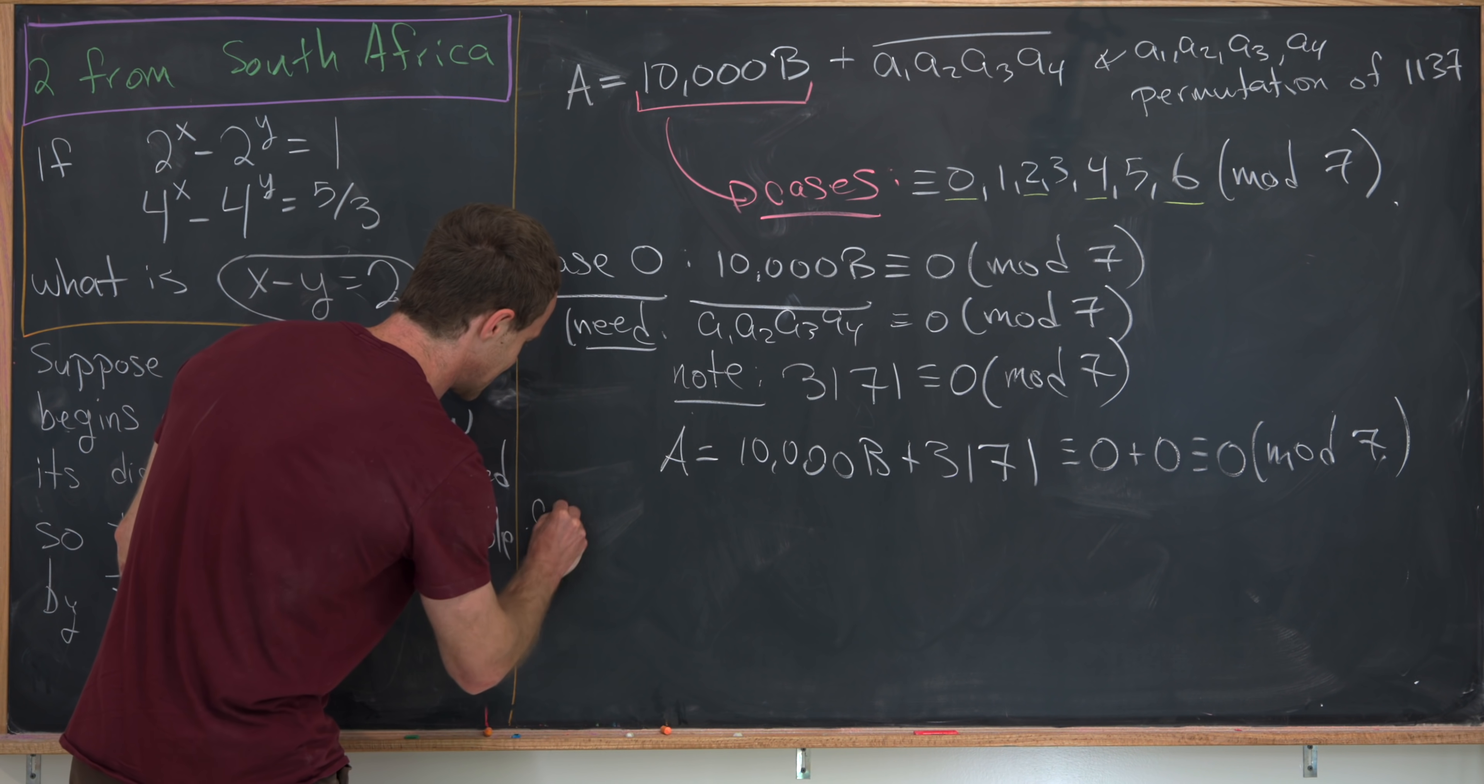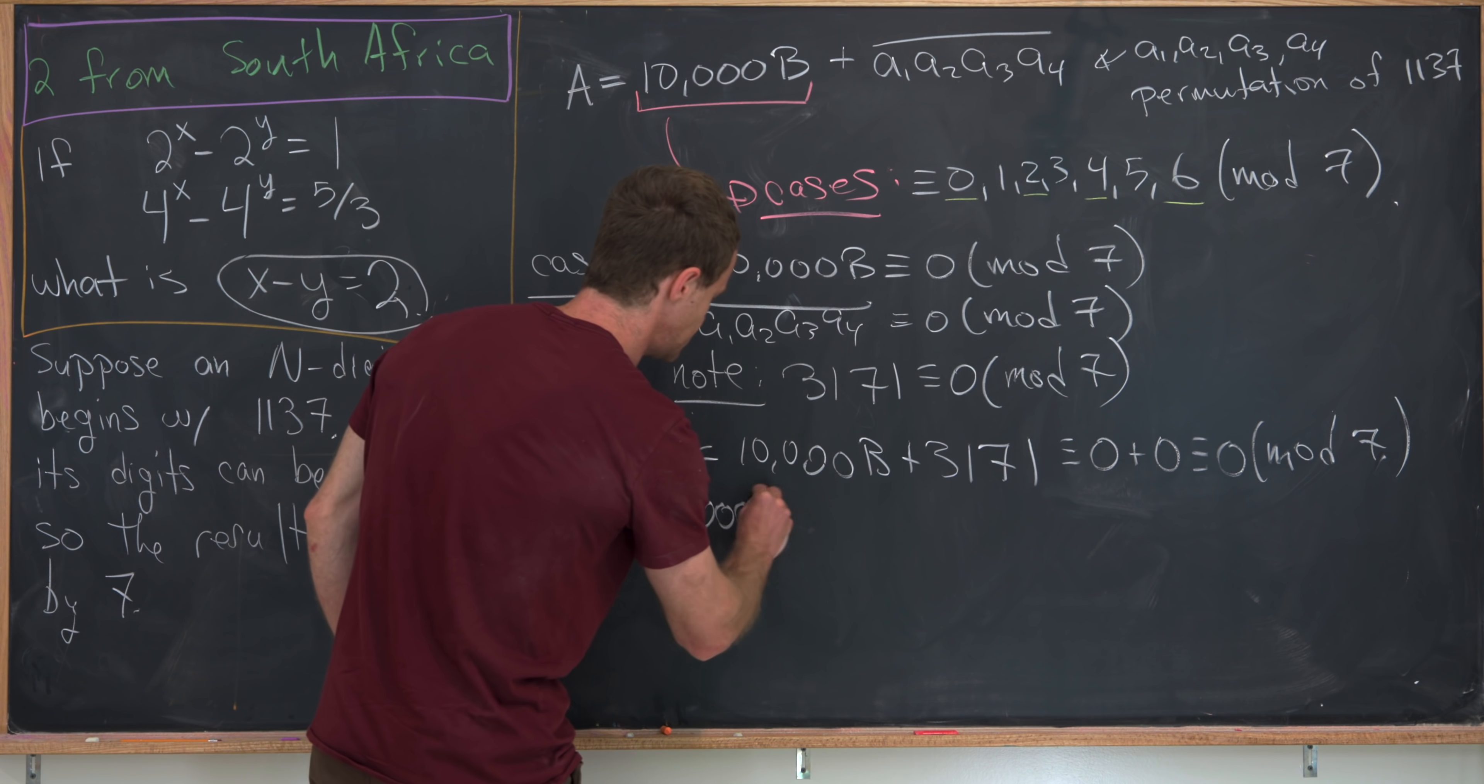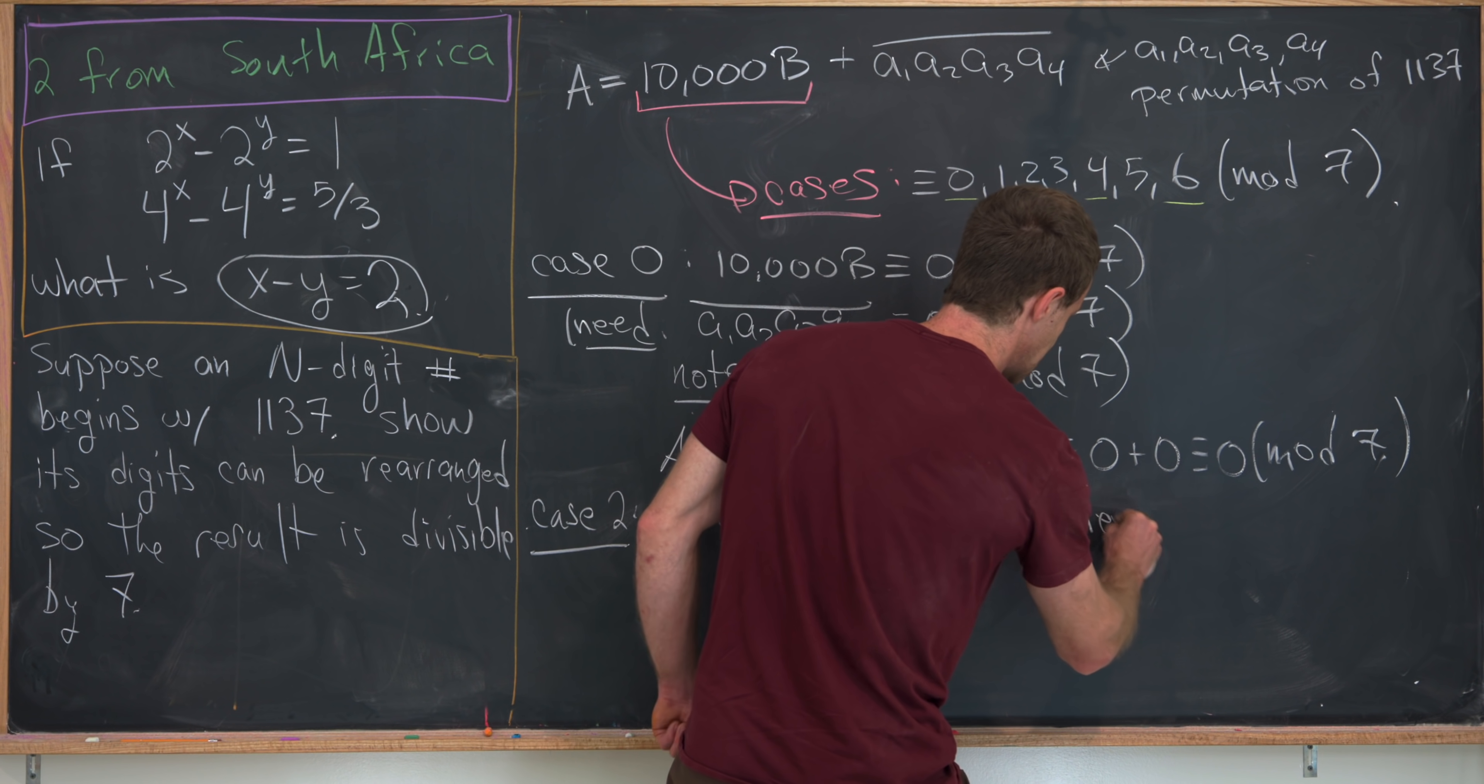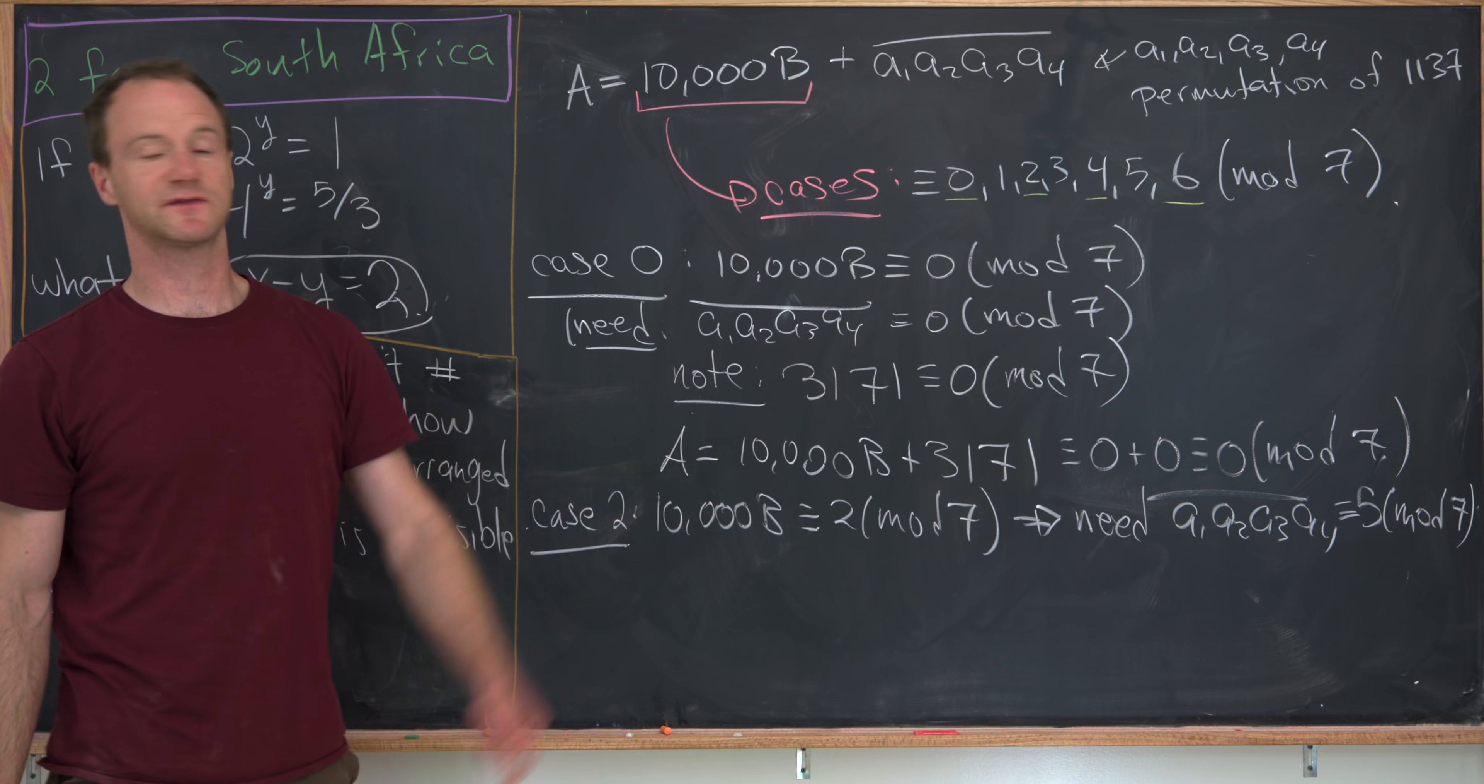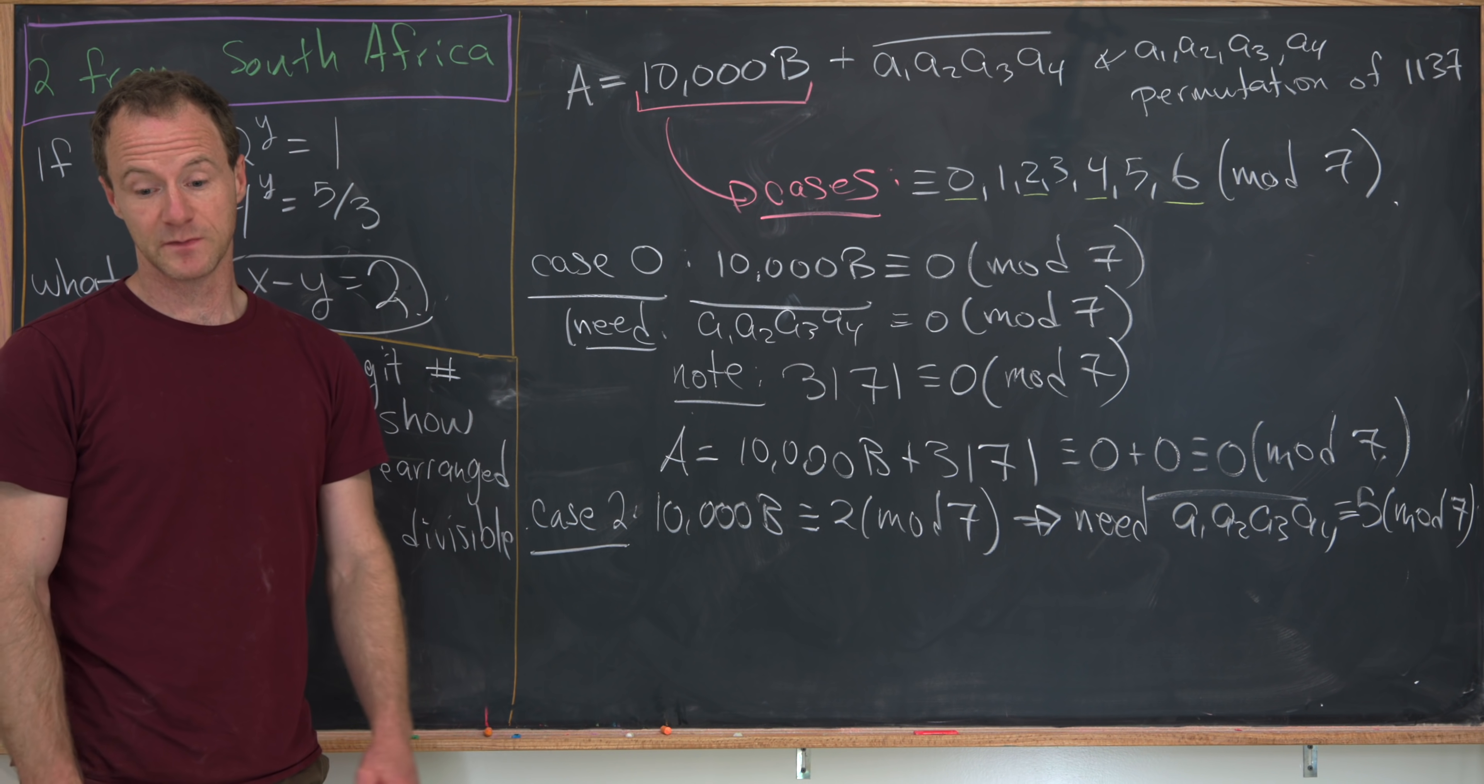Okay, so now let's move on to this second case. So that'll be case 2. Because again, we're only doing the even cases. The odd ones will be homework. And so this will be 10,000 b is congruent to 2 mod 7. So that means that we need our digits, a1, a2, a3, and a4, to be congruent to 5 mod 7. That way we'll have 2 plus 5 is 7 mod 7, but that is 0 mod 7.